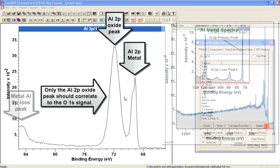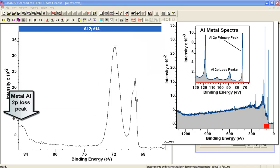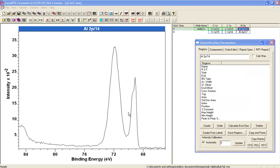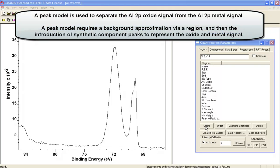So in order to work out the ratio for the aluminum oxide, we need to remove the metal from the signal of the aluminum 2p, and we'll do that by introducing a background and creating a peak model.